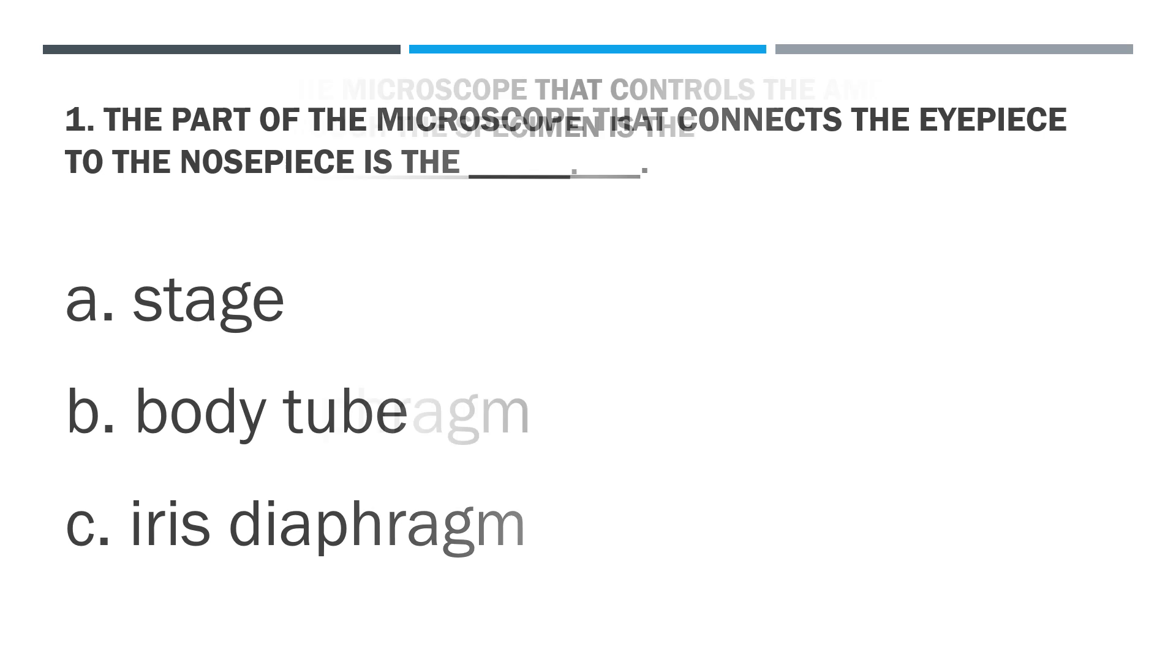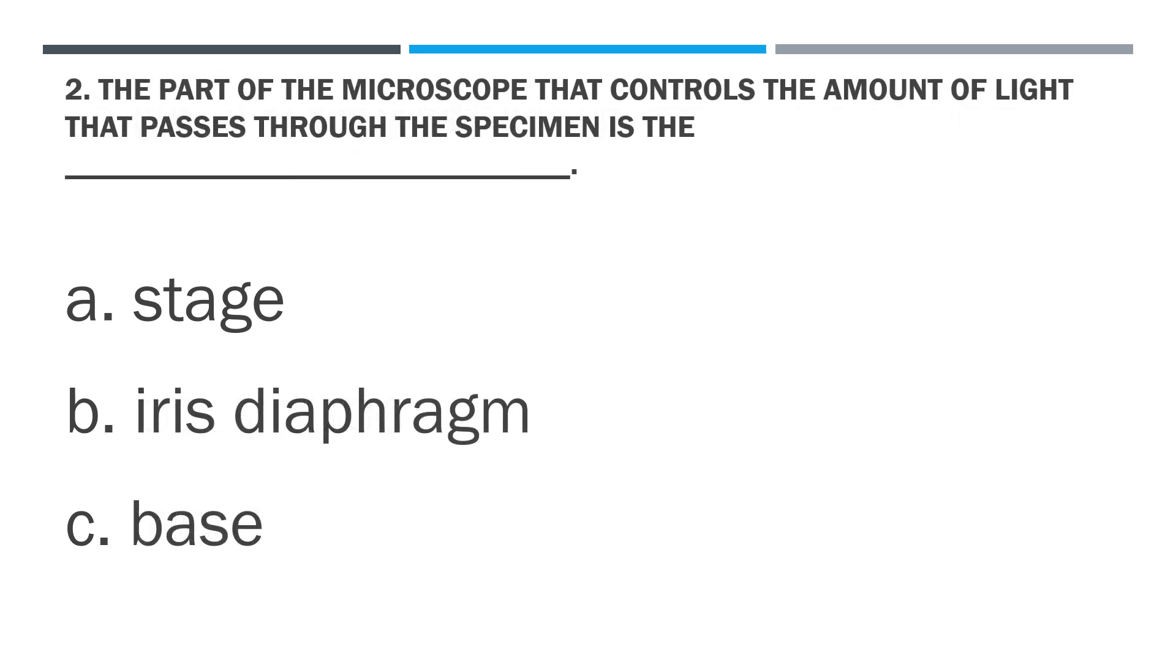Question 2: The part of the microscope that controls the amount of light that passes through the specimen is the blank.